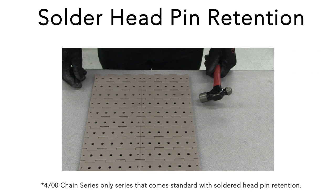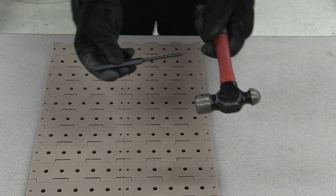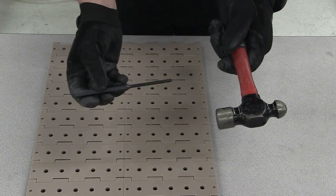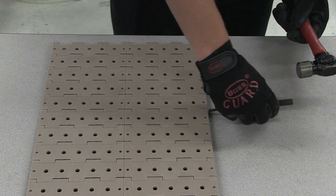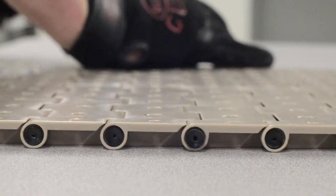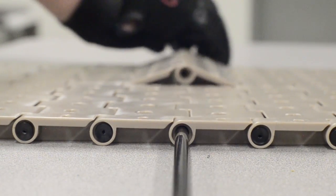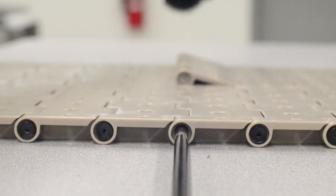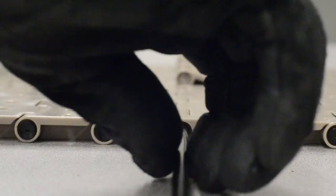To disassemble mat top chains utilizing a soldered head pin retention system, you must drive the pin holding the chain together out of the hinges. To do so, take a hammer and a drift and place the drift on the pin. Begin to strike the drift until the pin has been driven out of both hinges. Please note that used pins cannot be reused.